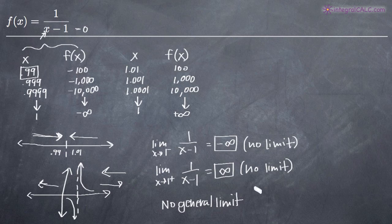You could also write it as the limit as x approaches 1 of 1 over x minus 1 does not exist.